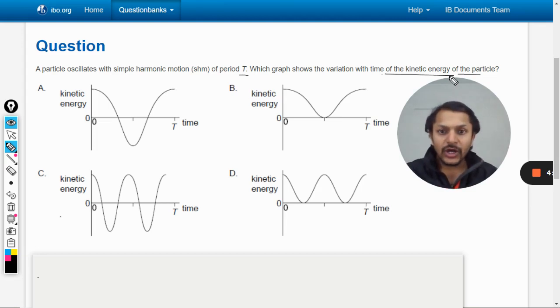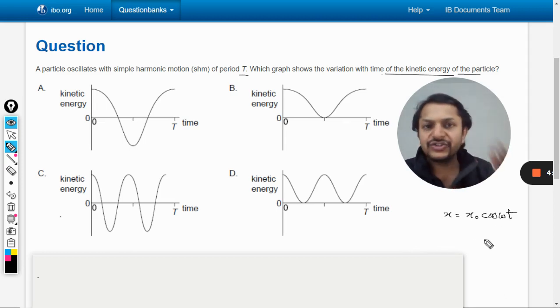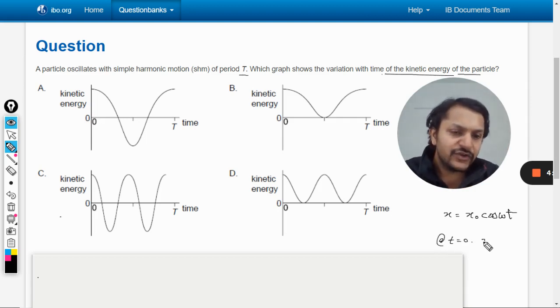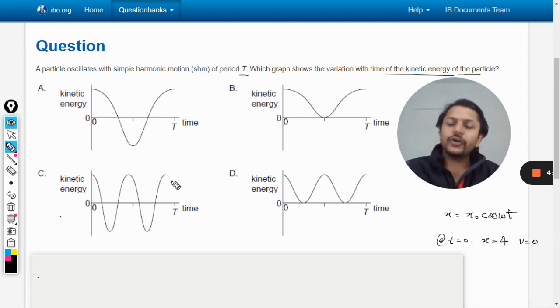In textbooks generally what they do is they start their SHM from the extreme position. So at t equals zero the body is at extreme position, and they get displacement x equals A cos omega t. But the problem is that at t equals zero, if your position is at the extreme position, the velocity should be zero, and if the velocity is zero, the kinetic energy has to be zero.